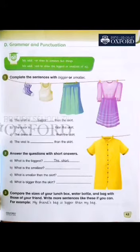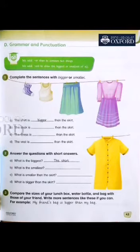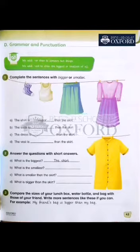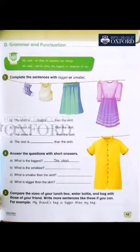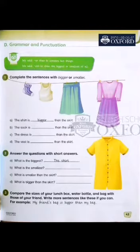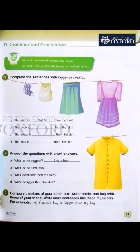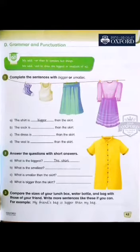We read the opposites: big and small. Do you know what is big and what is small? When we want to compare two things, we add ER. And when we want to compare all the things, we add EST.